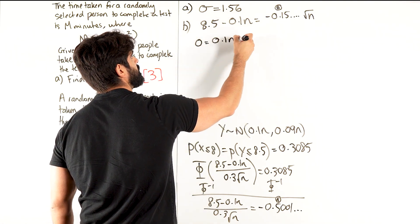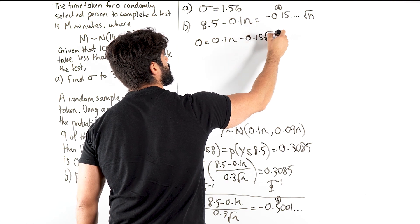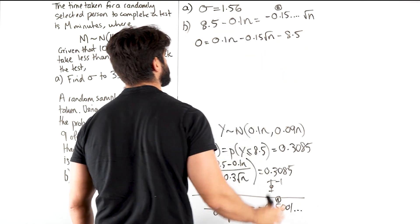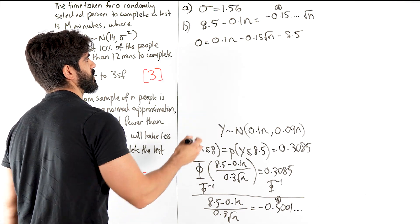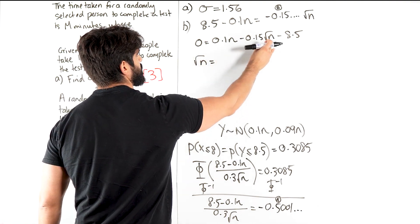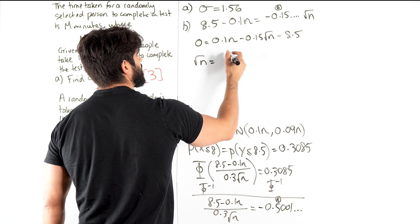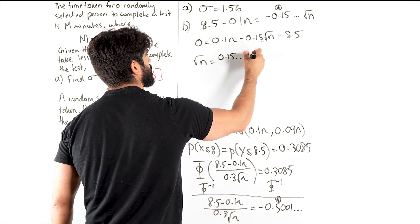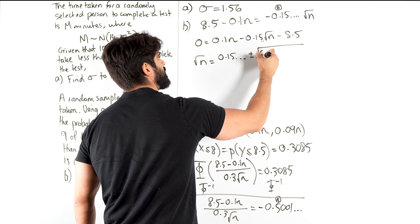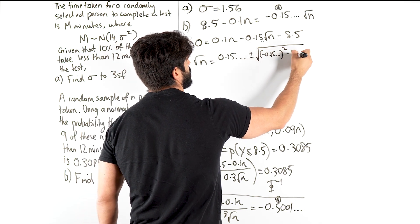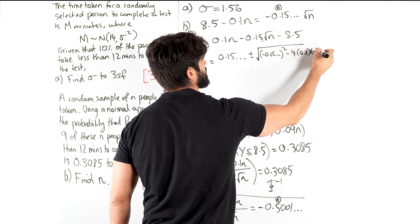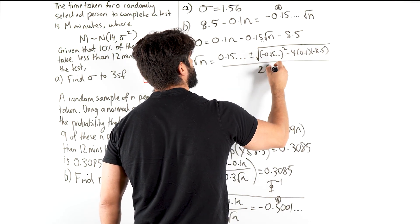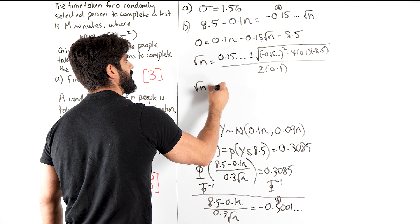So we have 0.1n minus 0.15 root n minus 8.5. And now we're going to do the quadratic formula for root n. Okay, because that squared is this. So we get negative B, so I get 0.15 dot dot dot plus or minus root B squared minus 4ac, in the exam you need to show all this, all over 2a. And then we just slap it in the calculator.